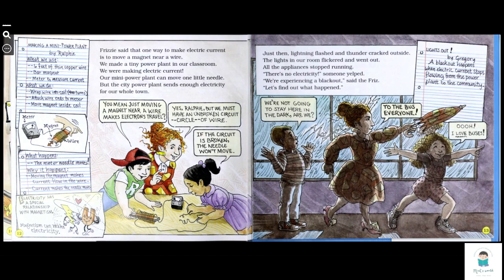Magnetism can make electricity. Just then, lightning flashed and thunder cracked outside. The lights in our room flickered and went out. All the appliances stopped running. There's no electricity. Someone yelled we're experiencing a blackout, said the Friz. Let's find out what happened. A blackout happens when an electric current stops flowing from the power plant to homes in the community.